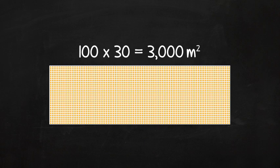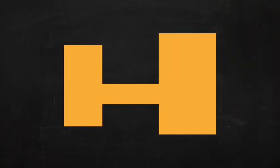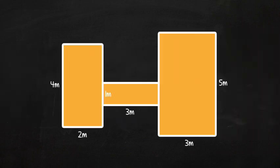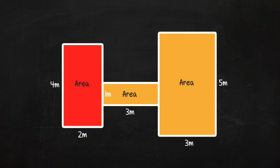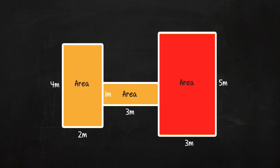What about an irregular shape like this? Just break the shape into rectangles, and add the area of each rectangle. This shape can be broken into three rectangles. Here's one, there's one, and here's another.